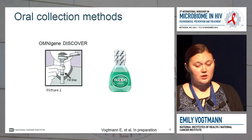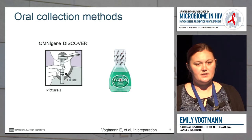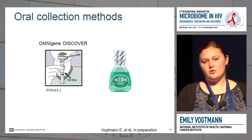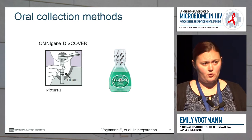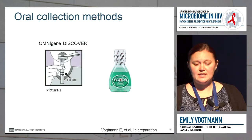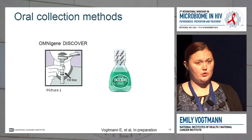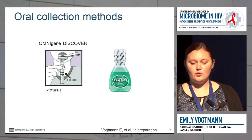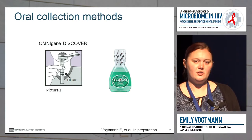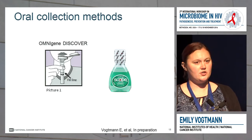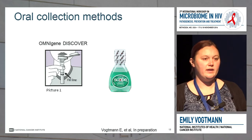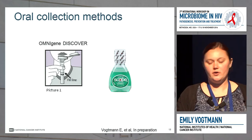We also looked at oral collection methods in that study. This study is still in progress, so I'm not going to present any results. But just so you know, the OmniGene Discover kit and SCOPE mouthwash were both adequate for microbiome measurements. The OmniGene Discover kit did appear to be different from the SCOPE mouthwash, but that's not necessarily unexpected because the SCOPE mouthwash was a swish and gargle, which meant they're likely collecting microbes from other parts of the mouth.